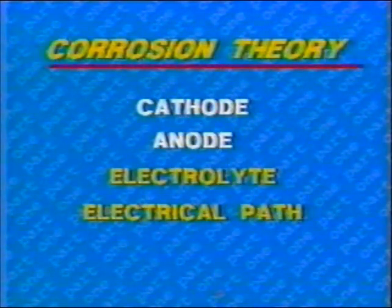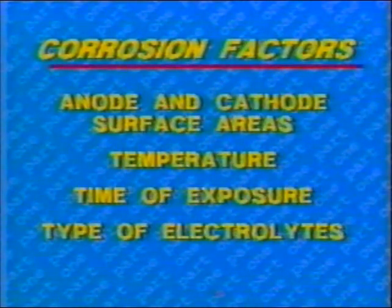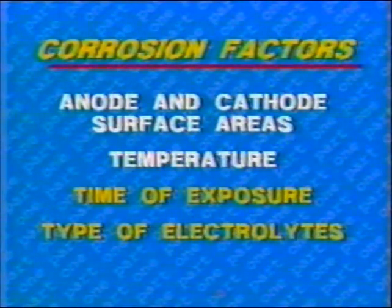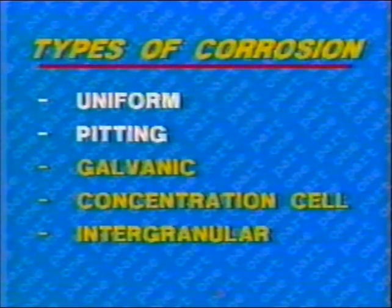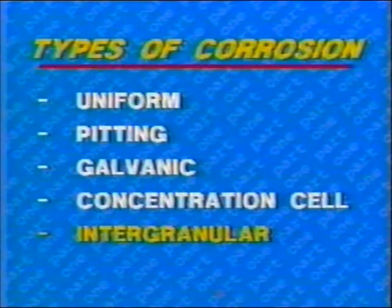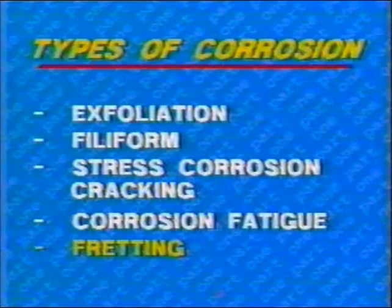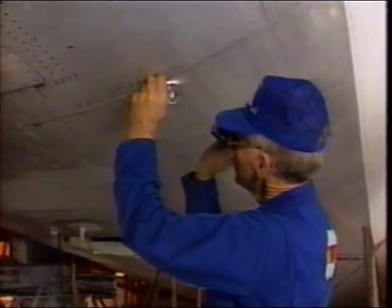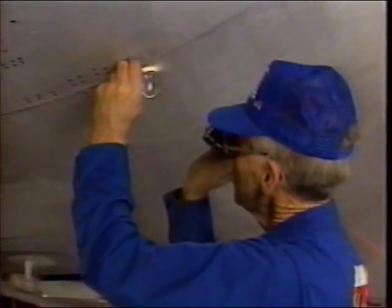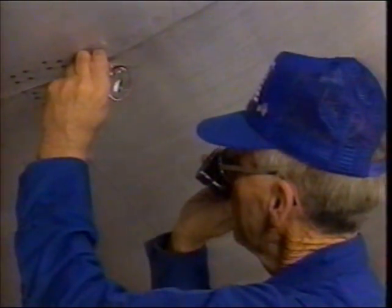To summarize part one: we discussed the basic theory of corrosion, factors that influence corrosion including various electrolytes, and the major types of corrosion which affect aircraft metals. For some, this was a review; for others, it was brand new material. We should all now have a solid foundation of corrosion knowledge to move to part two: inspection requirements.